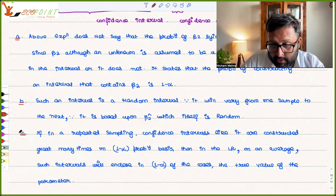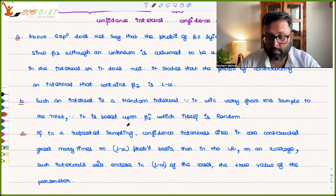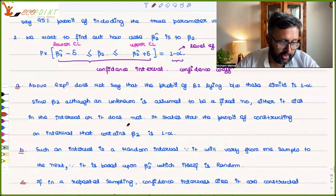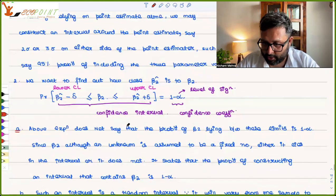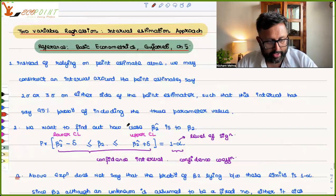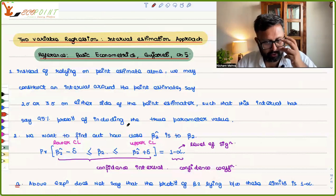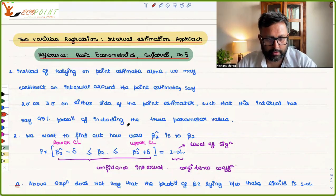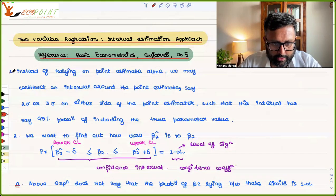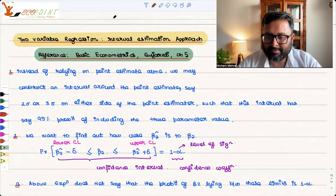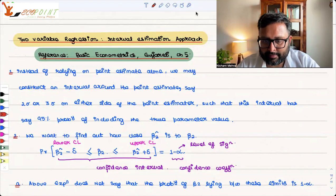So remember this. Tomorrow we will be doing the confidence interval for beta 1, beta 2, and for population variance. We'll try to complete that part tomorrow. I hope it was useful to you, thank you.